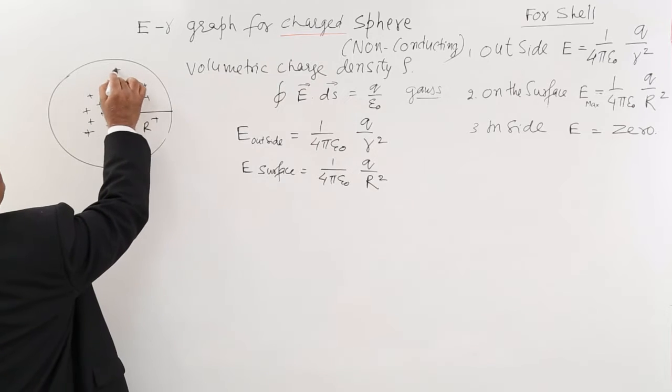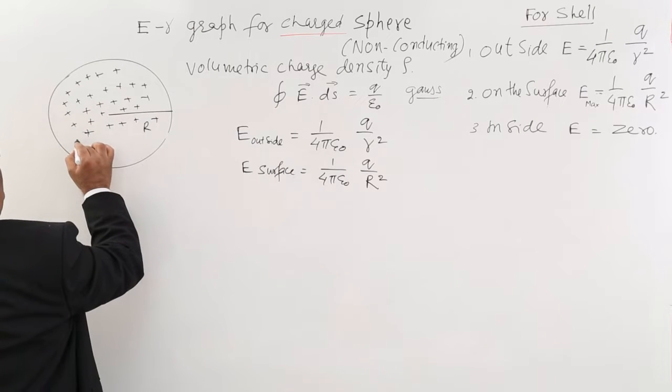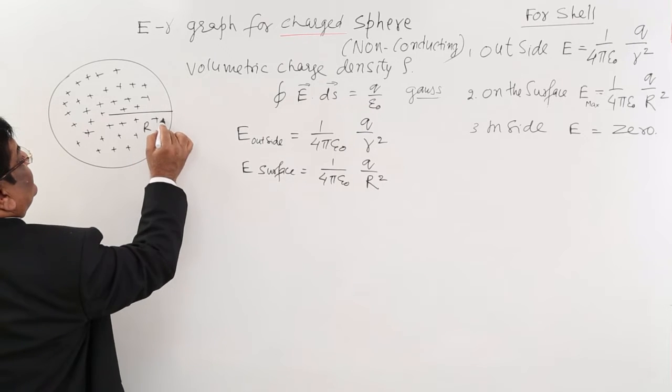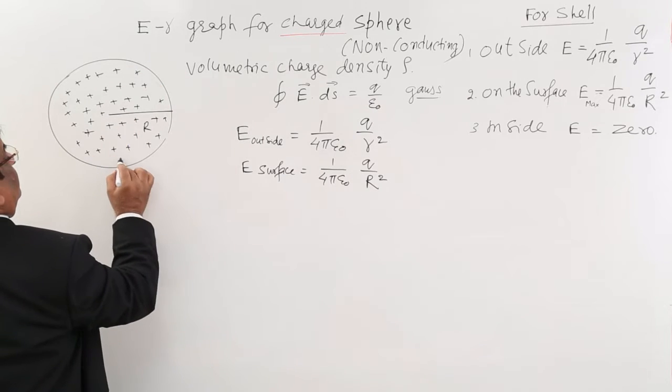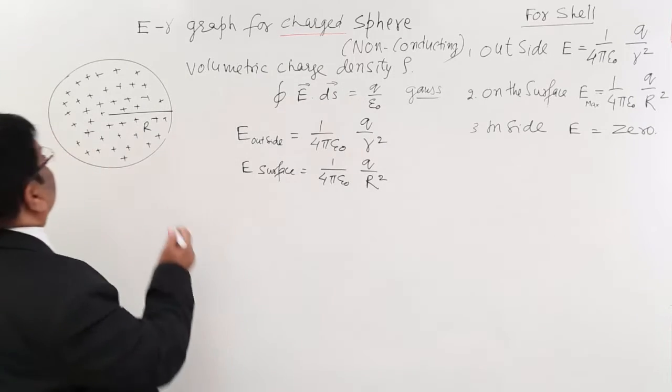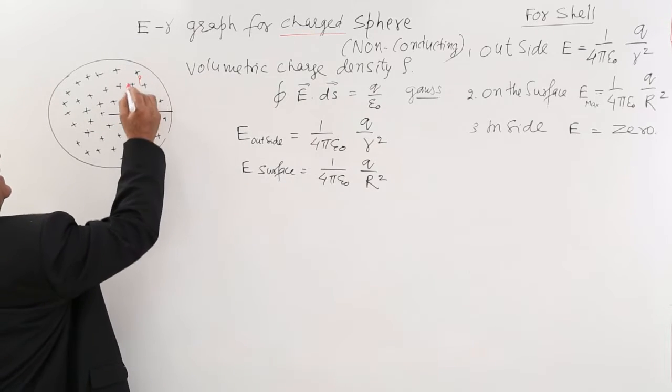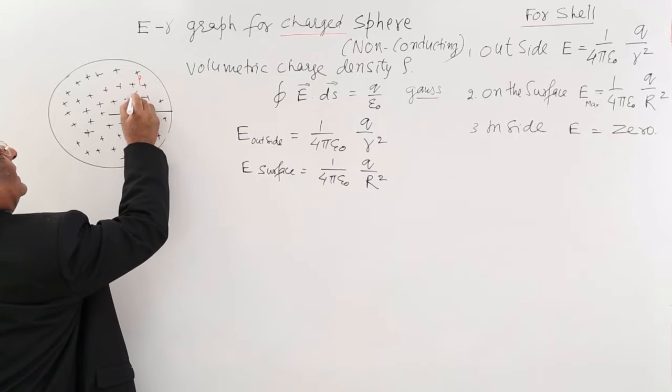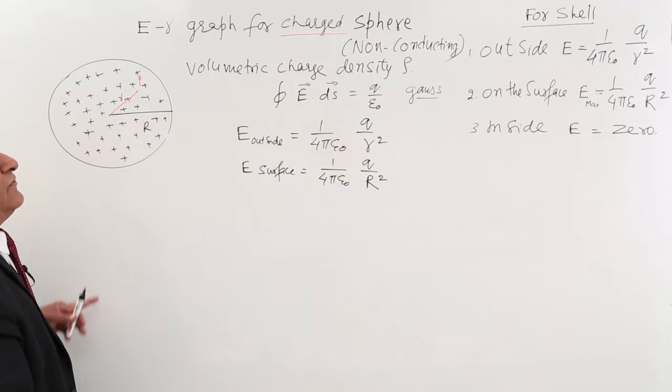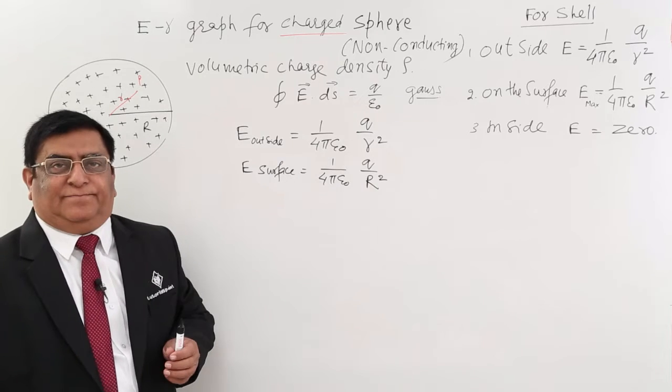We have a point here and that point is at a distance which is less than radius R. So this is all charges filled up. Now we have a point P which is inside it at this location at distance R and we have to find out electric field here. For this purpose we again start our derivation with help of Gauss theorem.